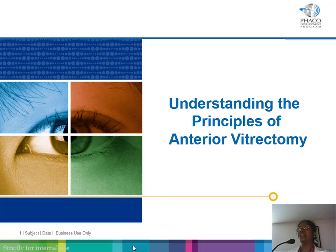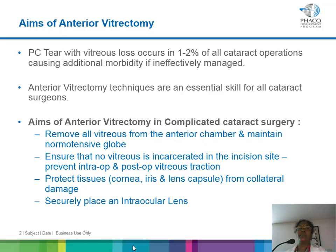The aim of anterior vitrectomy is to remove all the vitreous from the anterior chamber and maintain a normal-tensive globe. At the end of surgery, there should be no vitreous incarcerated in the wound. Third, protect all collateral tissues — no damage to the cornea, no damage to the iris. Maximize PC support, and if possible, securely place an intraocular lens.